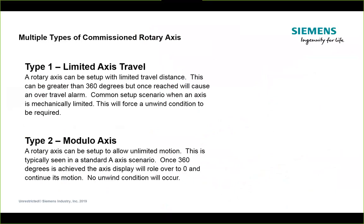You can have a limited axis travel, where the rotary axis can only go a set number of degrees and then must stop — maybe due to mechanical limitations or work holding with plumbing through the center. That rotary may be allowed to revolve three, four, or five times, but at some point it has to stop and unwind back to zero. Years back, all CNC controls worked that way because they were designed as linear controls and didn't know how to treat a rotary — so they'd just let it wind up.